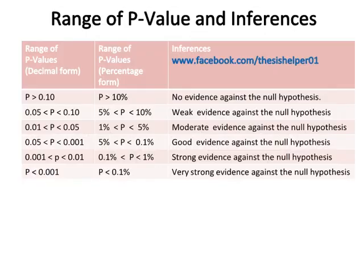Range of p-value and inferences: a probability greater than 0.10 signifies no evidence against the null hypothesis. A probability greater than 0.05 but less than 0.10 signifies good evidence against the null hypothesis. A probability greater than 0.001 but less than 0.05 signifies strong evidence against the null hypothesis. A probability less than 0.001 signifies very strong evidence against the null hypothesis.